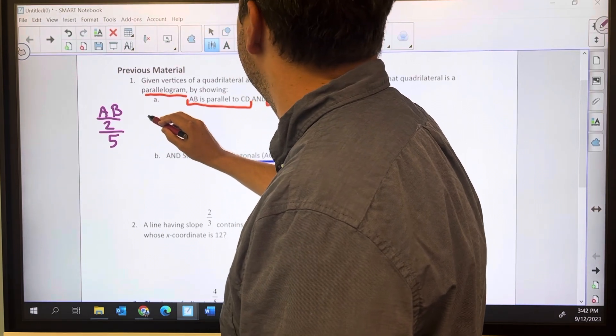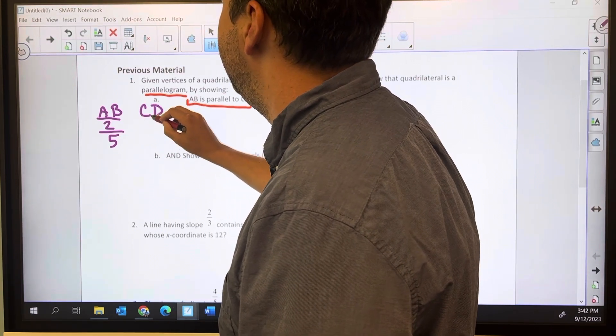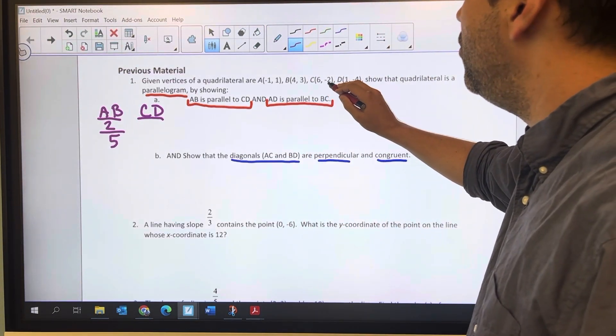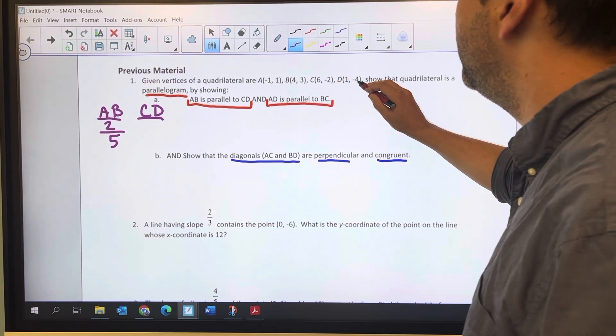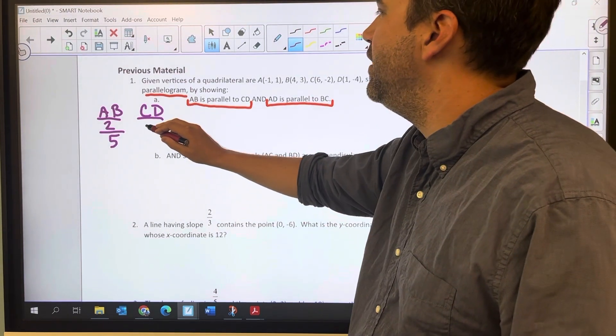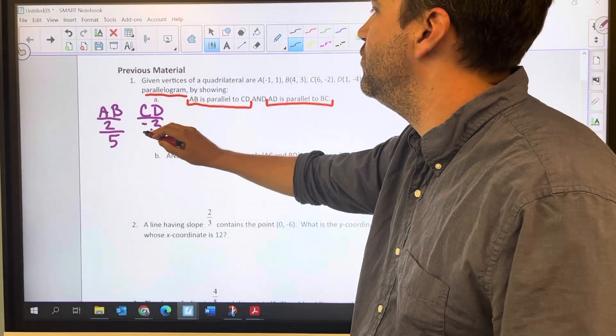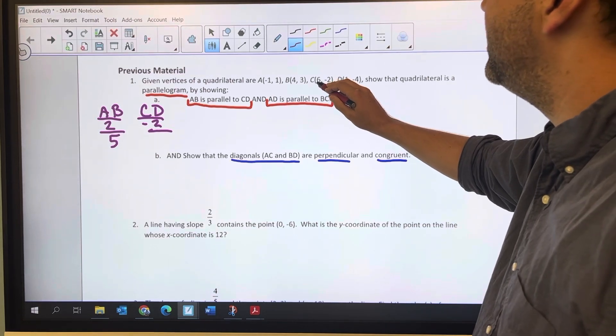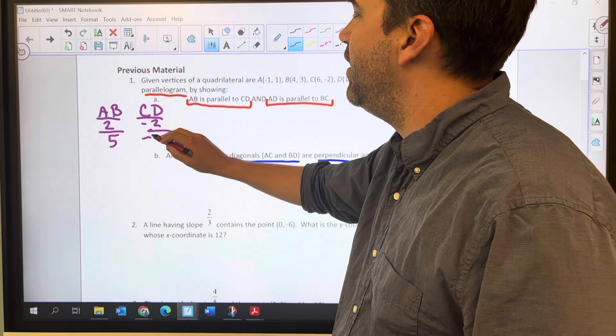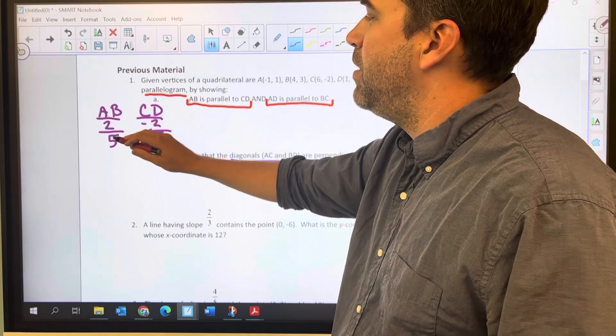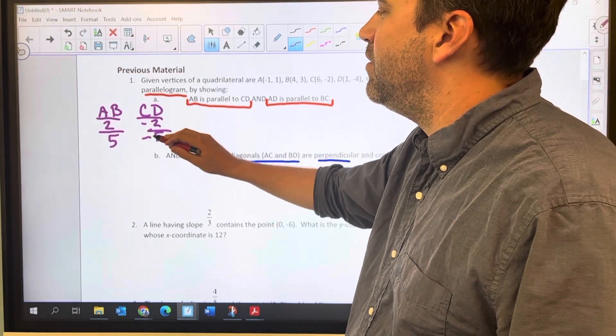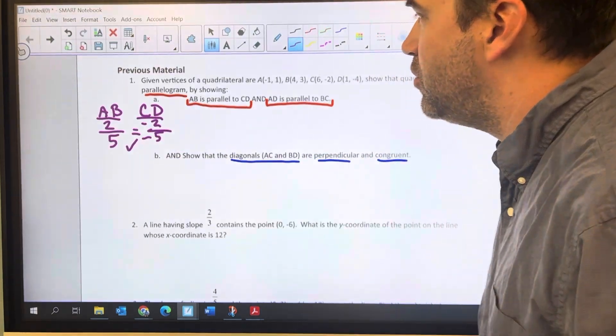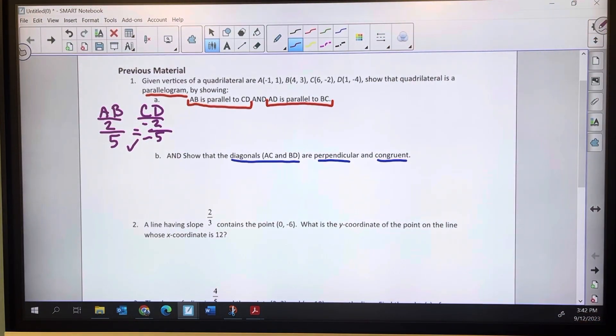And then slope CD. The Y is going from negative 2 to negative 4, so that's going down 2. And then the X is going from 6 to negative 1, so that's negative 5. And we know that positive 2 over 5 is the same thing as negative 2 over negative 5. So those are equal. So I know that AB is parallel to CD.